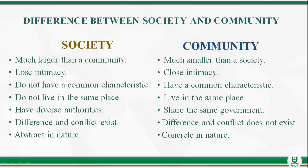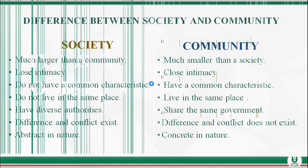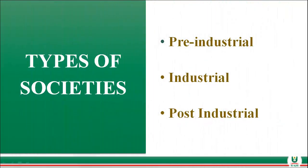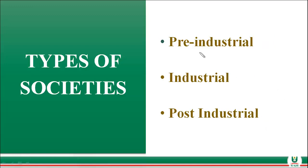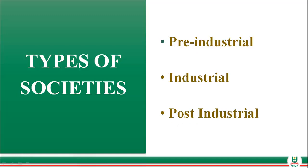Having said that, let's move on to the types of societies. We have three key types: pre-industrial society, industrial society, and post-industrial society — that is, before, during, and after the industrial era. Let's take them one after the other.